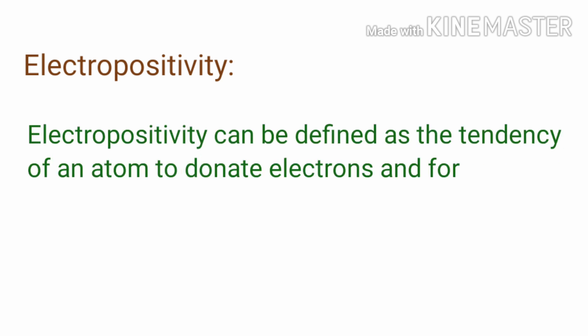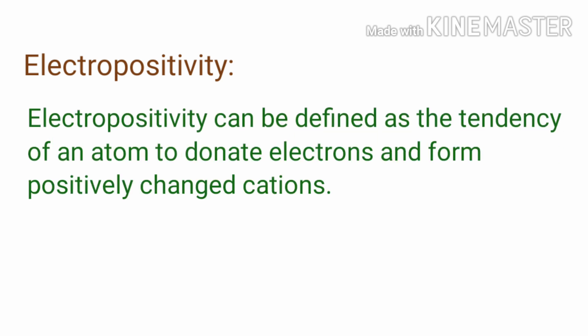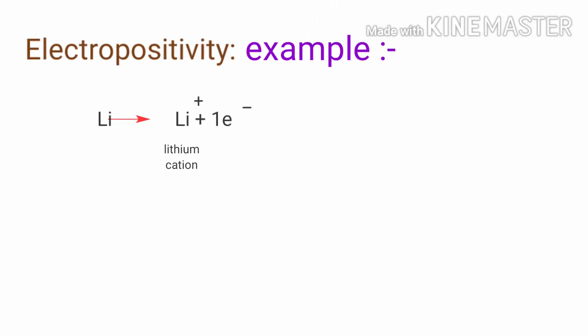Electropositivity can be defined as the tendency of an atom to donate electrons and form positively charged cations. For example, lithium has one valence electron; it tends to lose one electron and form a lithium cation.